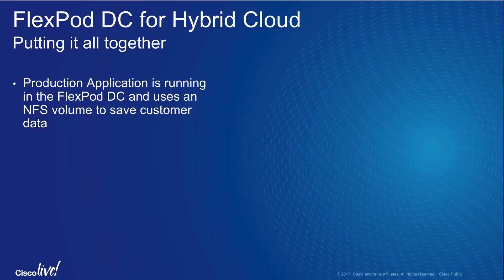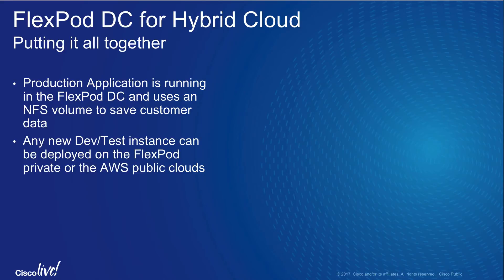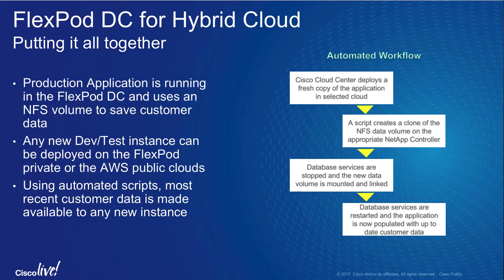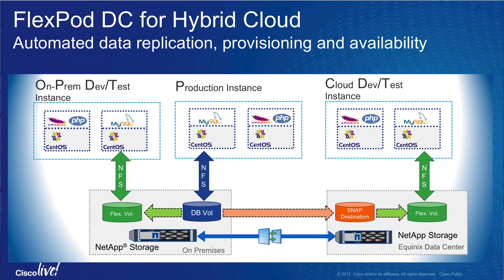In this solution, a production application is running in the FlexPod data center and uses an NFS volume to save customer data. The solution allows any new dev or test instance of the application to be deployed on the FlexPod private or AWS public clouds. Using automated scripts referenced through Cisco Cloud Center, the most recent customer data is made available to new application instances in either cloud.